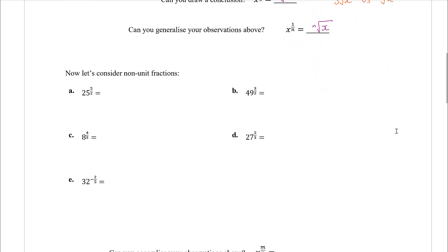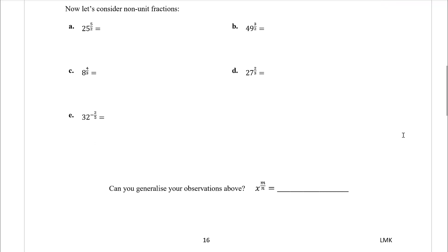Now let's look at non-unit fractions — fractions where the numerator is not one. We've looked at one half, one third, one quarter, one over n. Now let's think about fractions where the numerator is not one. Here we've got twenty-five to the power of five over two. We actually have two different powers in one. Since five over two equals five times one half, we could write this as twenty-five to the power of five and then that to the power of a half, or as twenty-five to the power of a half and then that to the power of five.